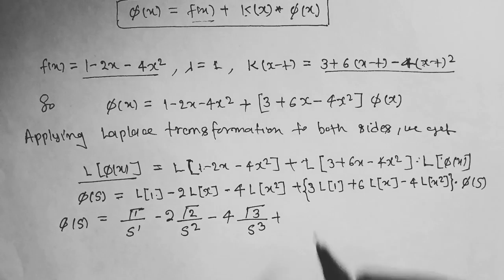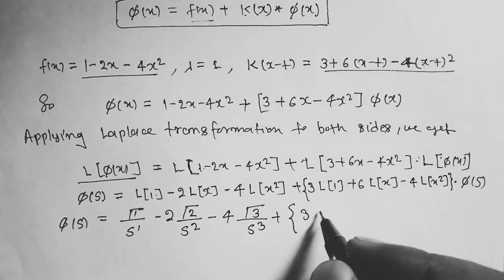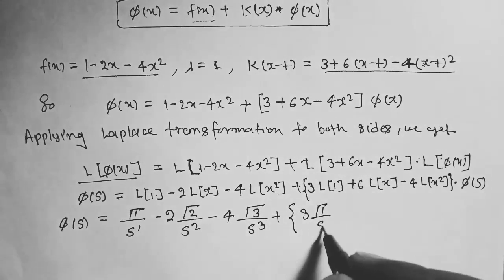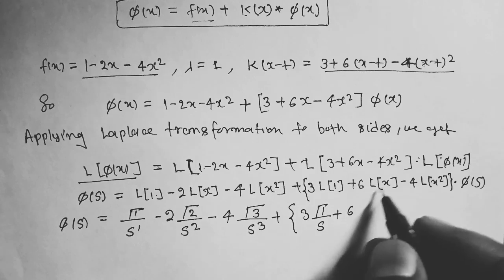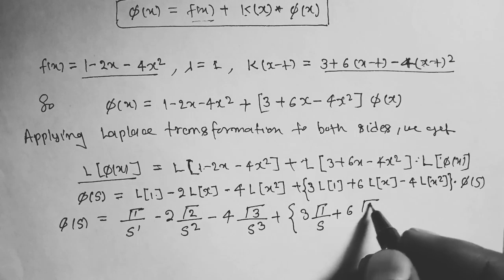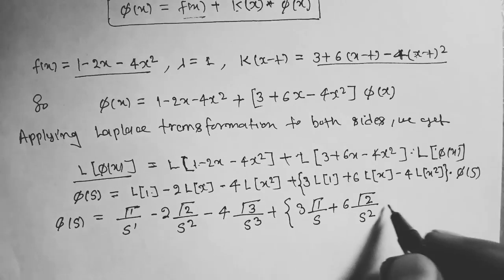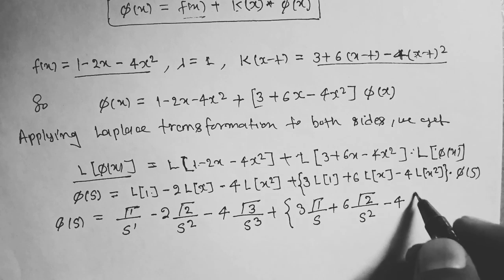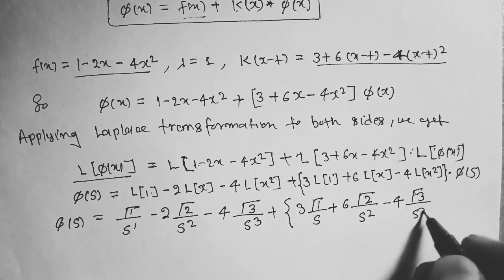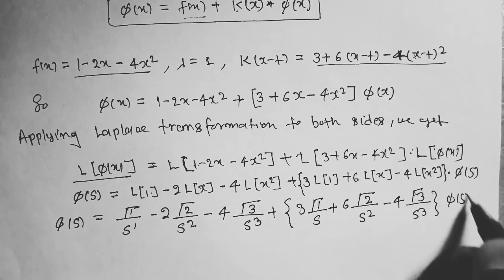φ(s) = 1/s - 2/s² - 8/s³ + [3/s + 6/s² - 8/s³]·φ(s).